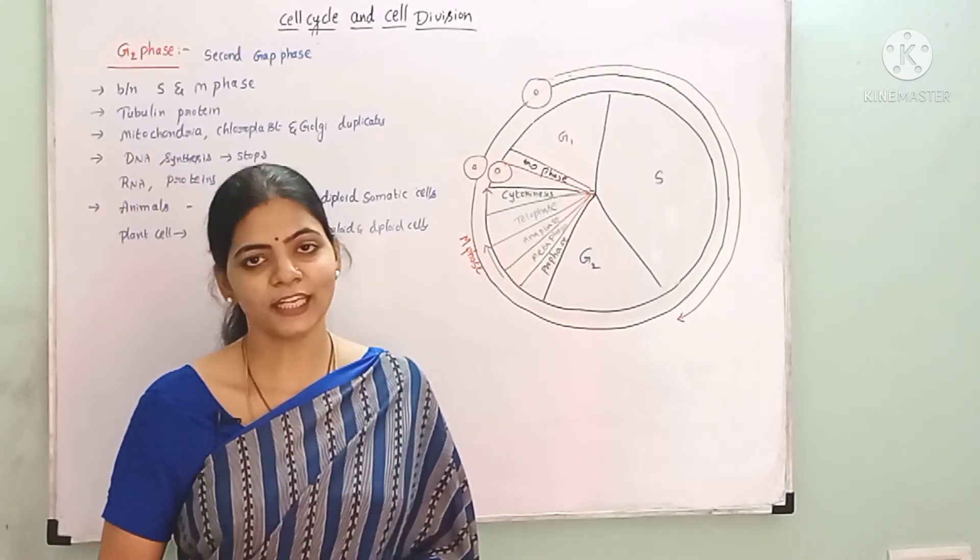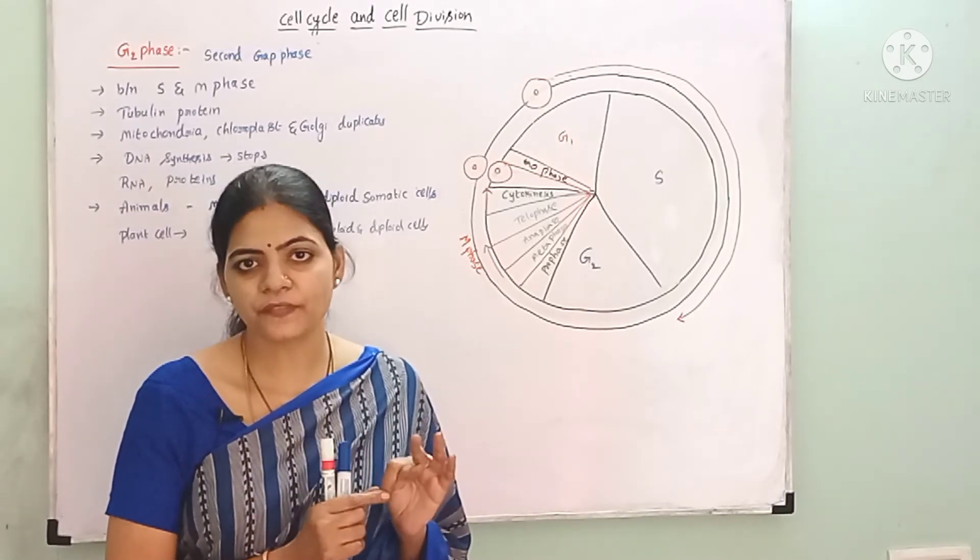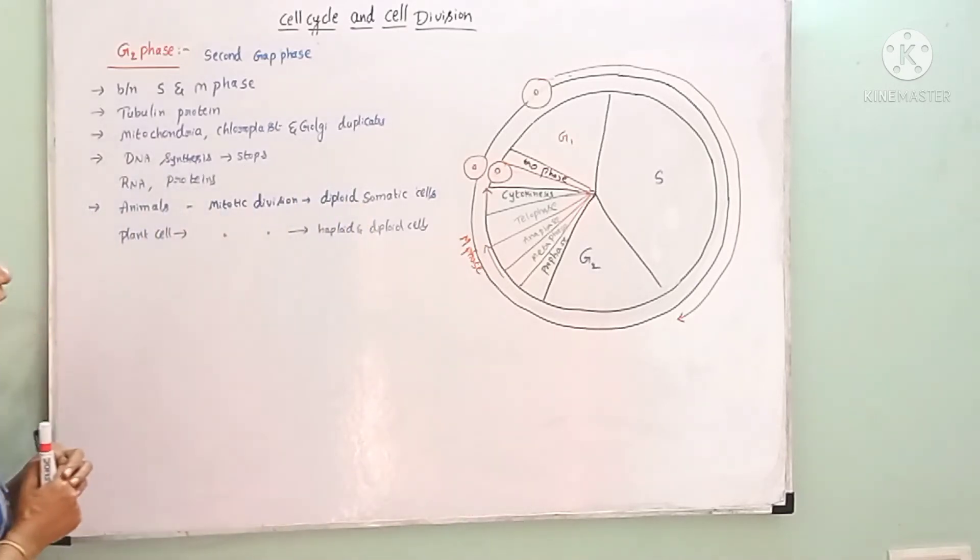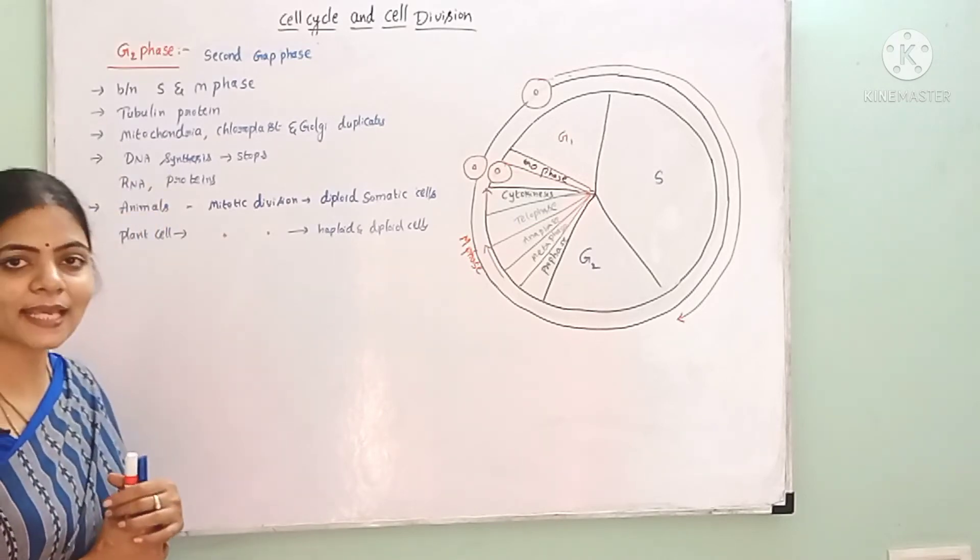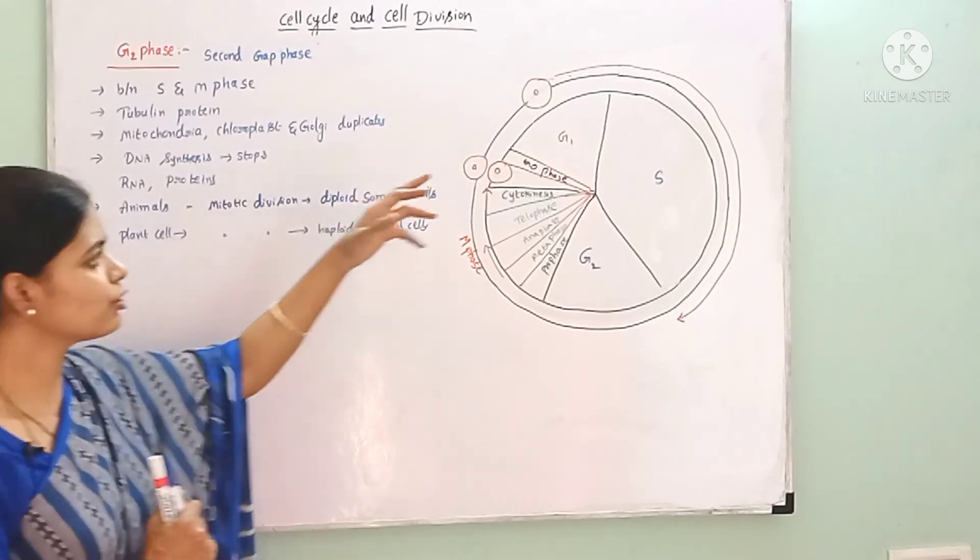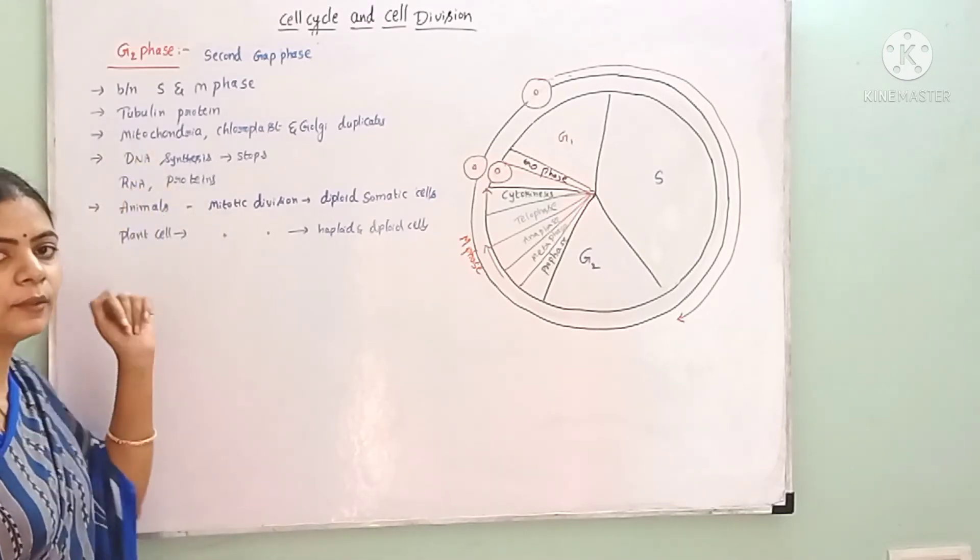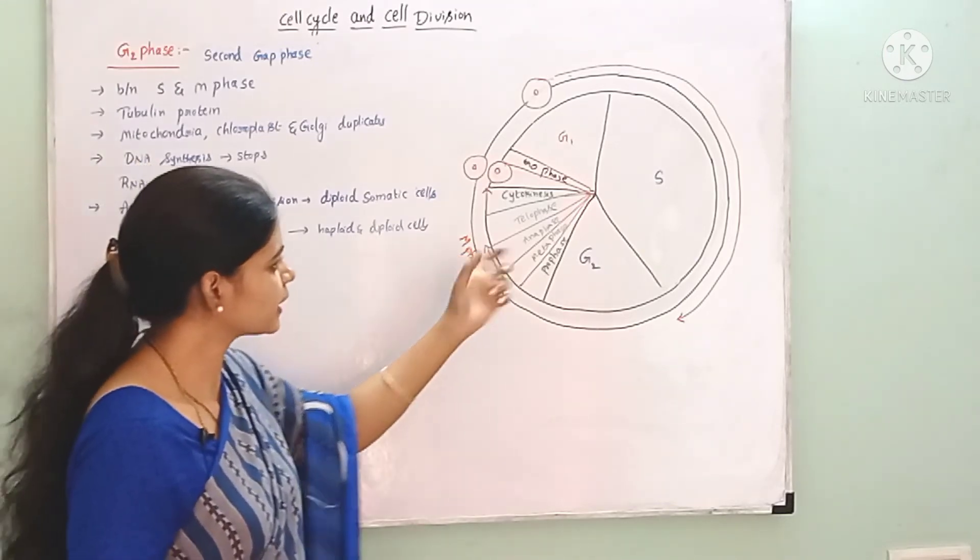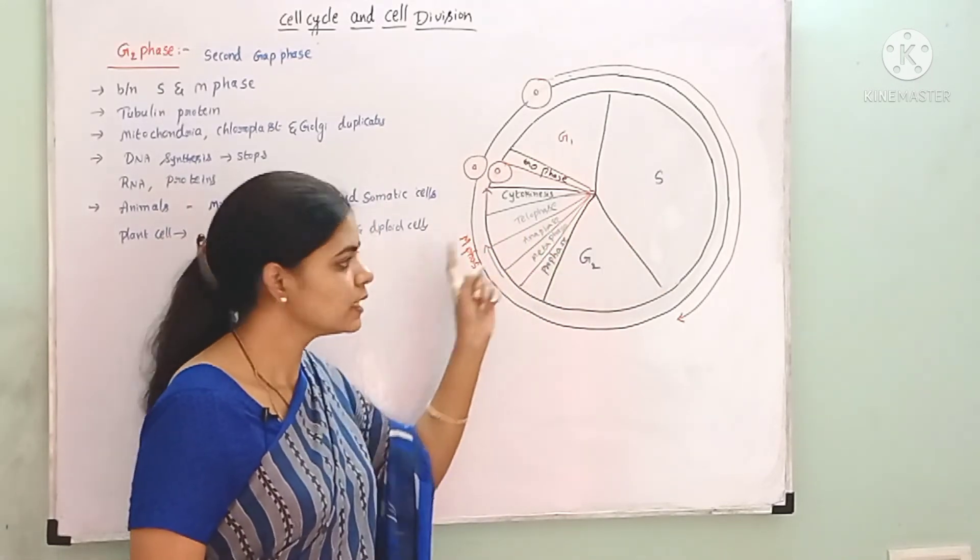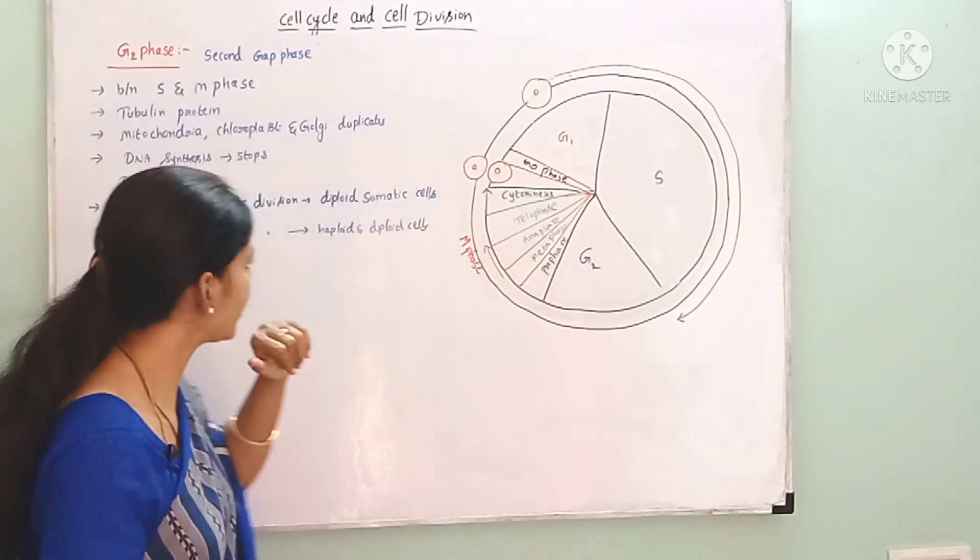The next phase in interphase is G2 phase. G1 is the first gap phase and G2 is the second gap phase. G2 phase is between S phase and M phase, between synthesis phase and mitotic phase.